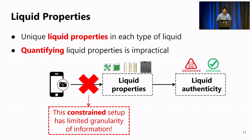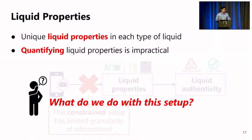The problem is that we cannot directly quantify the liquid properties. This is impractical in our setting because we only have an average smartphone camera. We cannot open a bottle. We do not have any additional device. This is an extremely constrained setup that has limited granularity of information. So what do we do with this setup? What kind of information can we get?